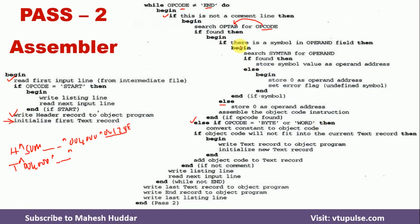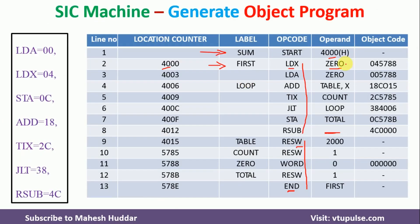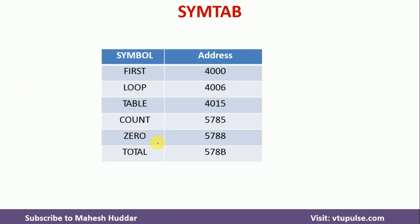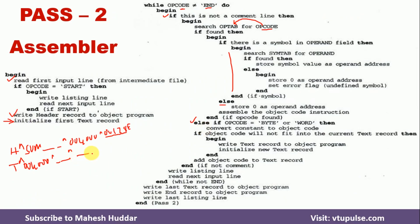If there is a symbol in the operand field, we search for that operand in SYMTAB — which was already created in pass1. For example, operand '0' is searched in the symbol table and its address value is used. LDX has opcode 04 and the address of '0' is 5788. So we write this object code into the text record. If the opcode is present in OPTAB and a symbol is in the operand field, we look up the symbol in SYMTAB and its value becomes the operand address.